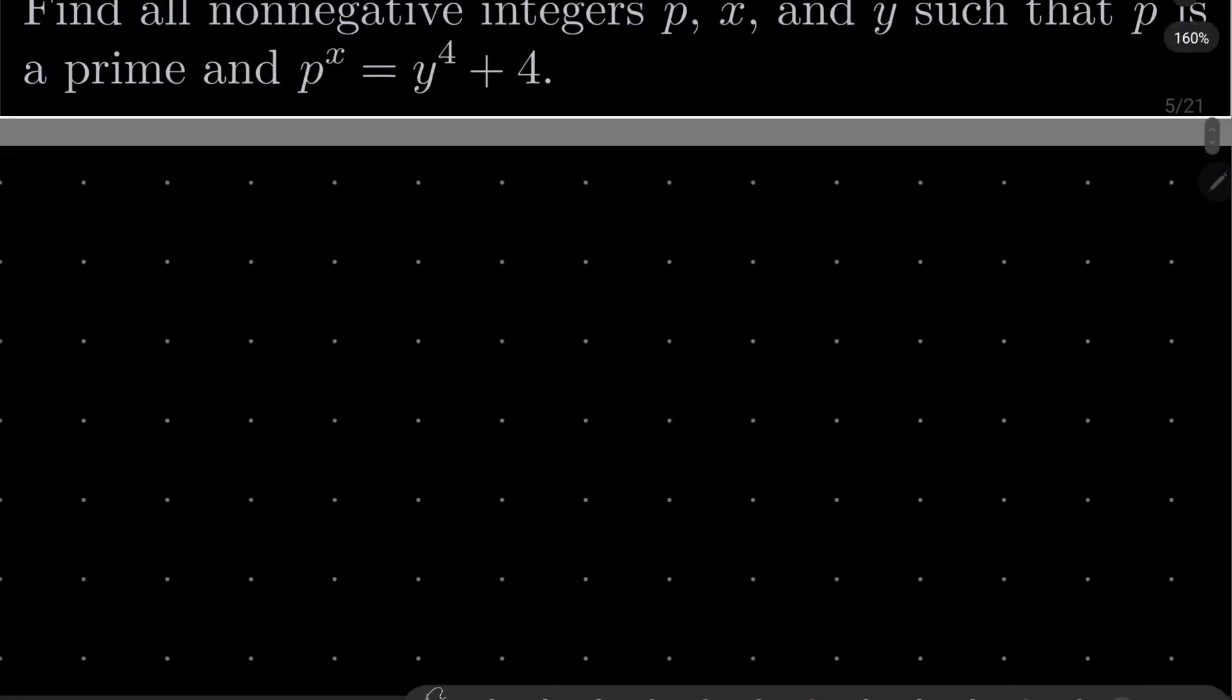All right, so let's start with first case, case number 1, when p equals 2. I will consider subcases. If x equals 0, then we have the following equation: 1 = y^4 + 4. No solutions.